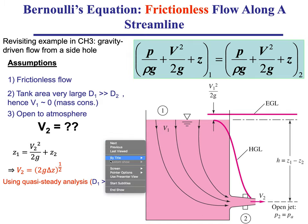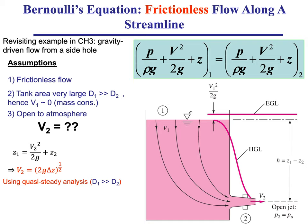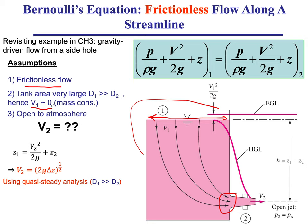Consider the example we did in class when we were studying chapter 3 on Bernoulli. We had a tank with a hole on the side and flow issued out of it under the effect of gravity. Under the assumptions of frictionless flow and an infinitely large tank — so the hole was much smaller than the tank — we deduced from mass conservation that the level dropped very slowly and contained very little kinetic energy.